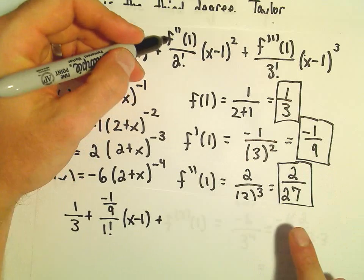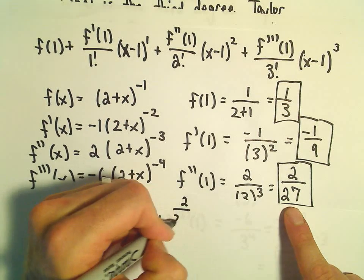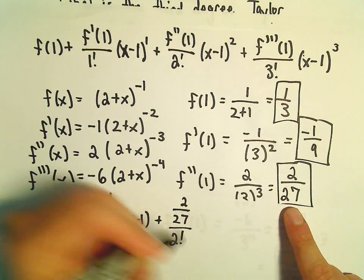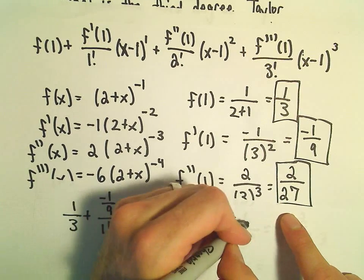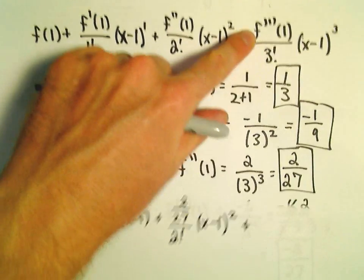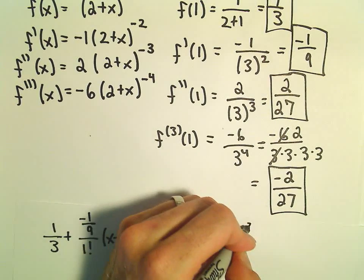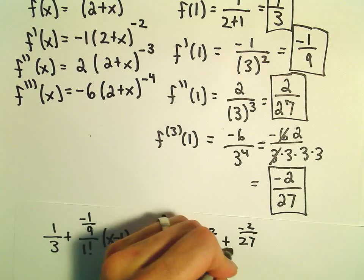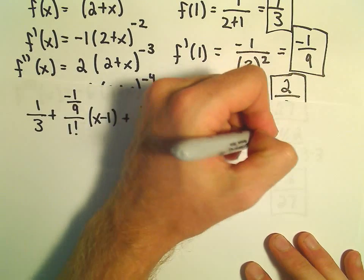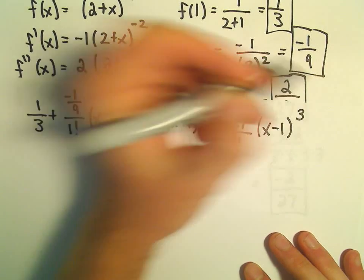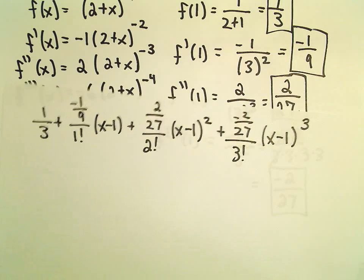f double prime of 1, we said that's 2 over 27, and then over 2 factorial times x minus 1 squared. And then f triple prime of 1, we said that's negative 2 over 27 over 3 factorial, and then we'll be left with x minus 1 cubed. And now we've got our approximation, it's just a matter of simplifying it now.